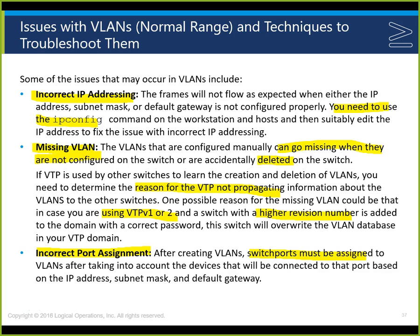For VLANs: incorrect IP addressing means frames won't flow as expected when the IP address, subnet mask, or default gateway isn't configured. Use 'ipconfig' to check. Missing VLANs are configured and go missing when not configured on the switch or accidentally deleted. When the VLAN is deleted, the ports associated with it go away; when you recreate the VLAN, the ports come back. This is all part of documentation. VTP — VLAN Trunking Protocol — sends all VLAN configuration information; creating a VLAN on one switch sends it to all other switches in the VTP domain.